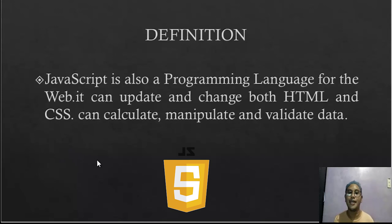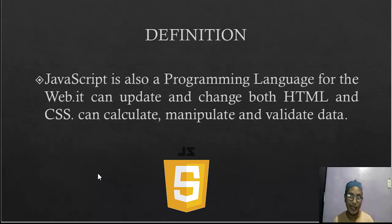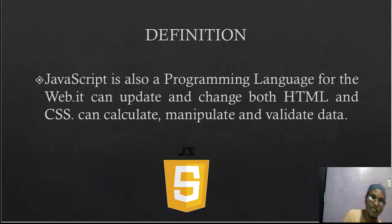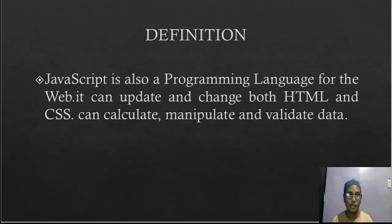JavaScript is also a programming language for the web. It can update and change both HTML and CSS. It can also calculate, manipulate, and validate data — similar to PHP, it can perform mathematical operations, manipulate data, send data to a database, and validate data. JavaScript is used to update or further modify our HTML and CSS code.